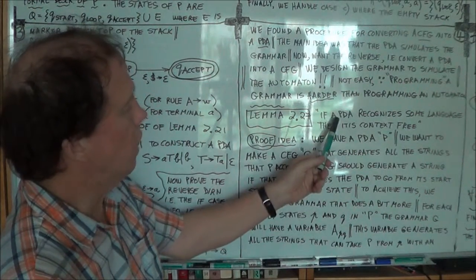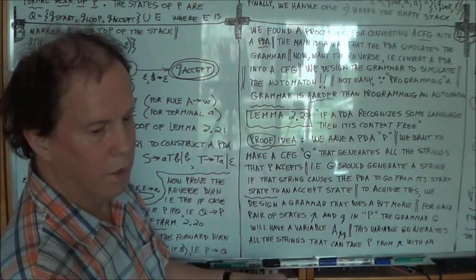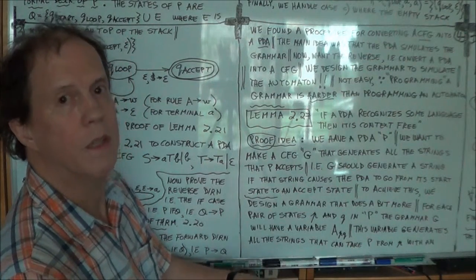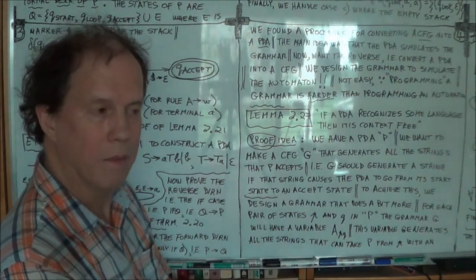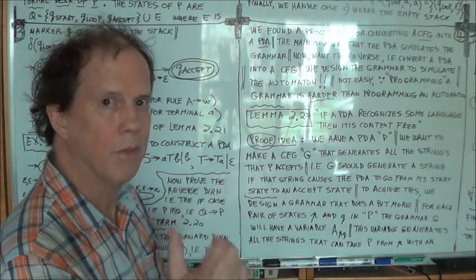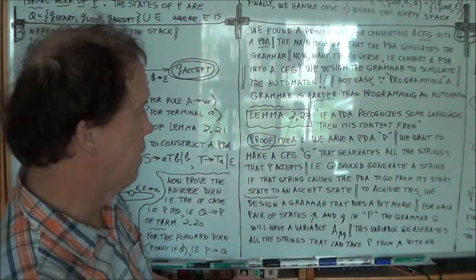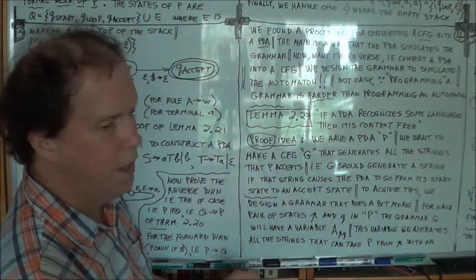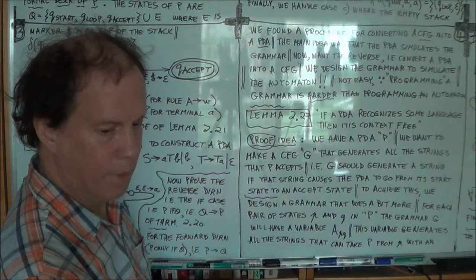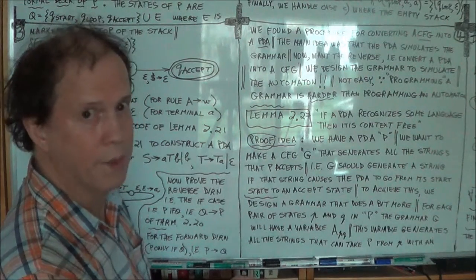In other words, whatever string is accepted by the PDA, an equivalent grammar G will generate the same string. Okay? What I've just said is sort of essential, okay? If you don't find, go, everyone. Alright. Okay, so if P recognizes a string, then G has to generate that same string. That's what it boils down to.